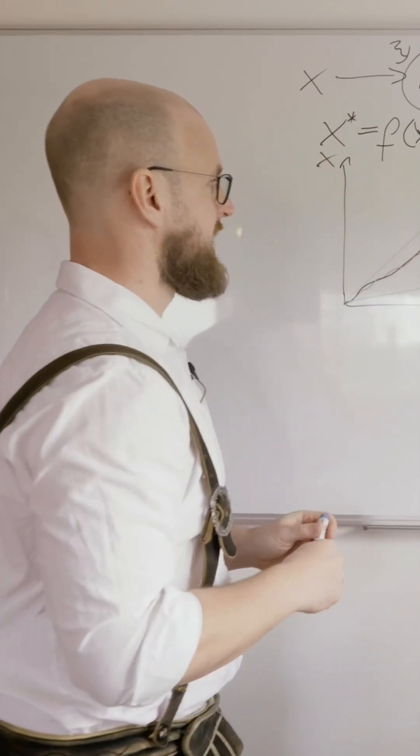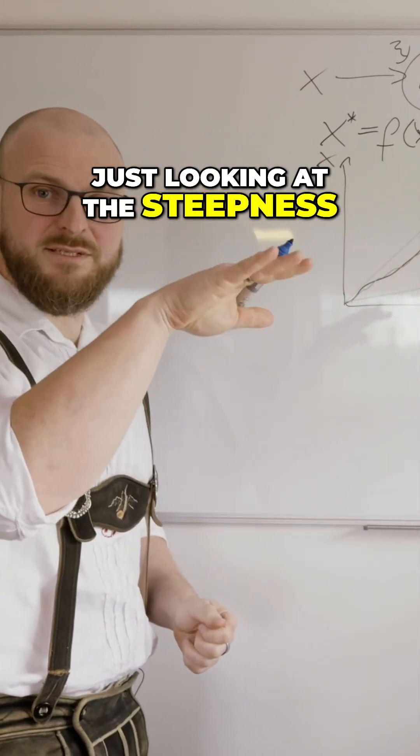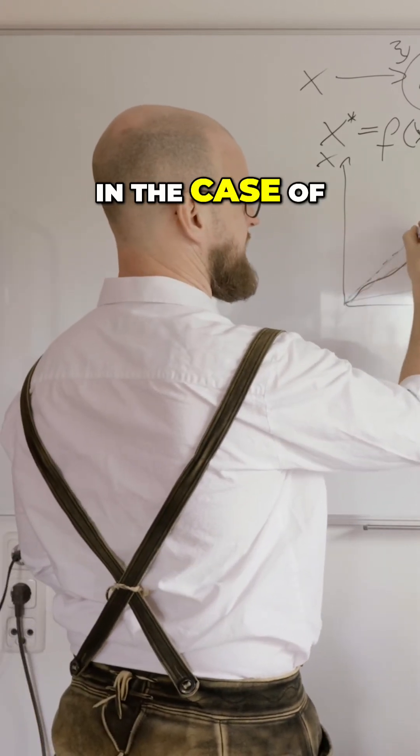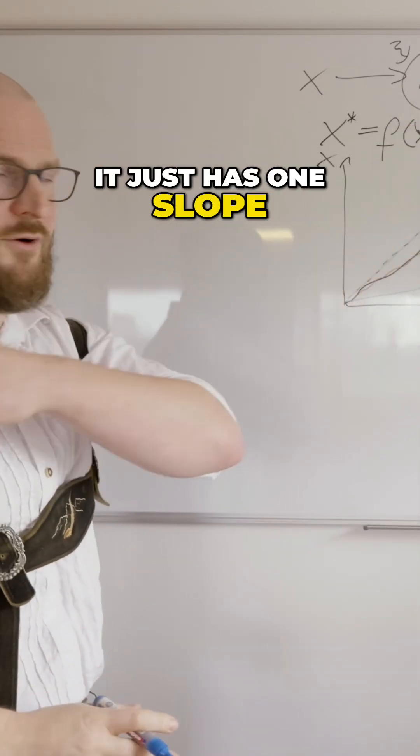That is given by just looking at the steepness, the slope of our curve. So in the case of a straight line, that's no problem - it just has one slope.